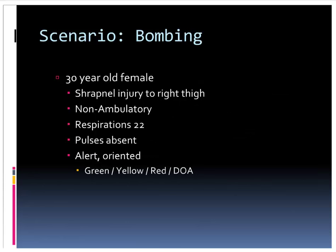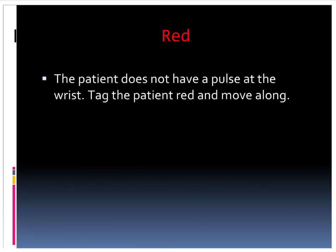A 30-year-old female with shrapnel injury to her thigh. She's not able to walk, breathing 22 times a minute, has no pulse at her wrist, but is following commands. That's a red patient. She doesn't have a pulse at the wrist — her blood pressure must be pretty low. Let's red tag that patient, move along, and get her into the treatment area where she can receive fluids.